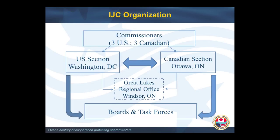This is the basic organization chart for the IJC. At the head of it, the decision makers are six commissioners — three U.S. and three Canadian — appointed by the President on the U.S. side and by the Governor General's office on the Canadian side. There are three different offices: a U.S. section in Washington, a Canadian section in Ottawa, and a joint section in Windsor, which is primarily responsible for Great Lakes Treaty implementation. Underneath that, there are boards or task forces across the border for most of the boundary basins. One major exception is Lake Champlain, which does not have an IJC board.